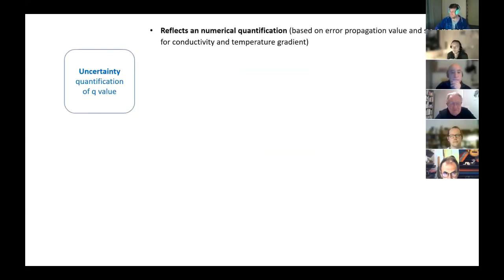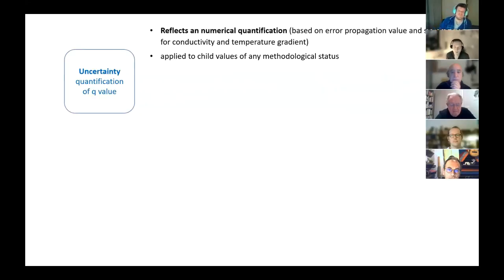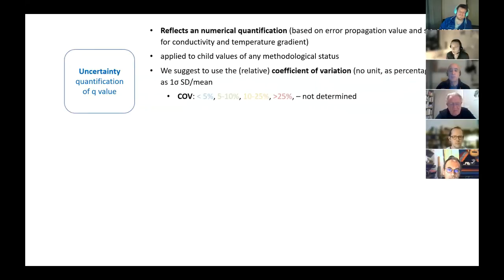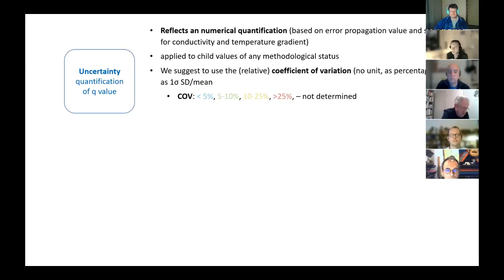First, uncertainty quantification is a numerical quantification based on error propagation from conductivity and temperature gradients and sample size. We think these quantifications should be applied at the child level. It combines two aspects: for error propagation, we could use the coefficient of variation (CoV) of heat flow values — defined as one sigma divided by the mean — a relative error parameter with no units, expressible as a percentage. Common values could be classed in categories like less than 5%, 5–10%, 10–25%, and so on.